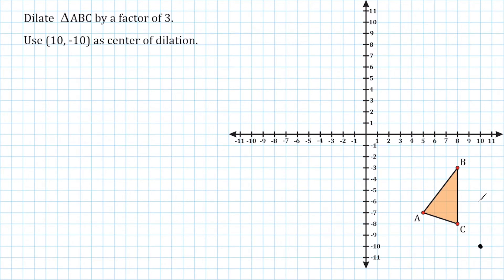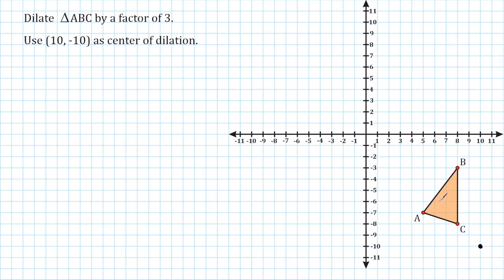Now, something that we should understand about dilations is this: wherever your center of dilation is in relation to the object you are dilating, if you start at that point and you move towards the object, that is the direction in which the object is going to expand or get larger. If our object is going towards our point, then our object is contracting or getting smaller.